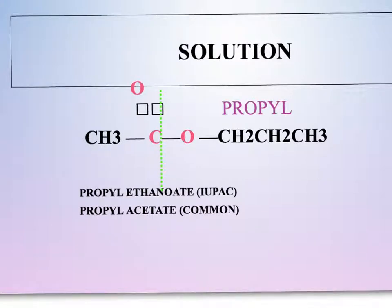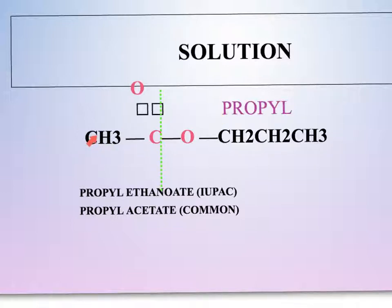Let's see if you got the answer correct. The double bond oxygens here — that's the carboxyl. The single bond here is the alcohol. We had a three-carbon chain, so we had propyl. We had two carbons here — that would make that an ethyl. So hopefully you got propyl ethanoate as the IUPAC name for this particular ester.